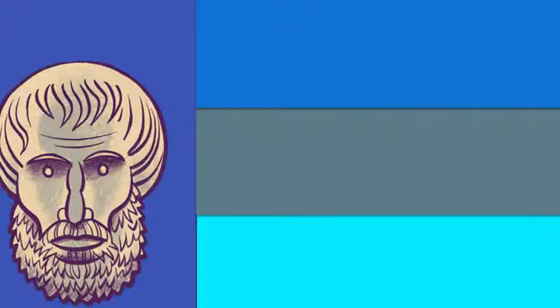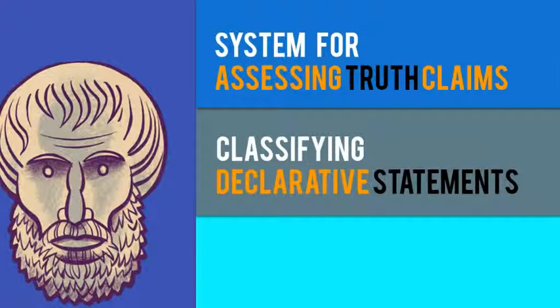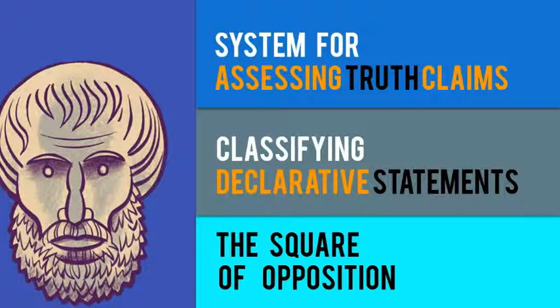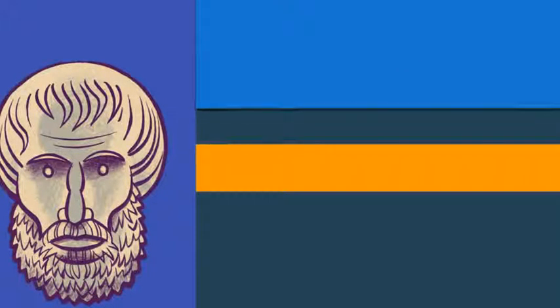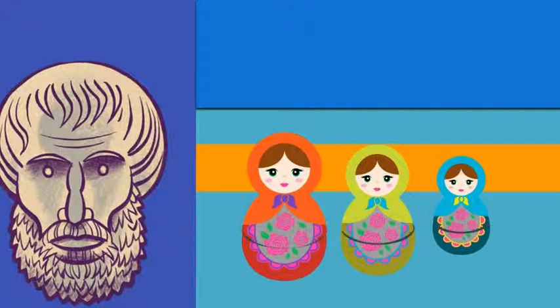Anyways, in our last exciting episode, we learned all about Aristotle's idea about how to develop a system for assessing truth claims that's centered on the classification of declarative statements and how they relate to one another. The system that Aristotle invented is called logic, and the specific device that we were learning about in the last episode is called the square of opposition. We're also going to be building on a metaphor that we introduced in the last episode involving Russian nesting dolls. So seriously, if you didn't watch the first episode, you've got to go check it out.